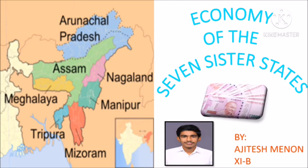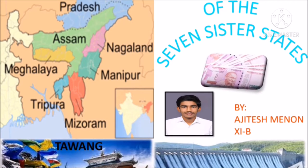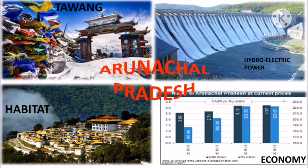Hello everyone, myself Ajitesh Menon and today I am here to talk about the economy of the Seven Sister States. Economy of Arunachal Pradesh — Power: As of March 2020, Arunachal Pradesh has a total installed power generation capacity of 378.64 megawatts, comprising 158.05 megawatts from hydro, 136.72 megawatts from renewable energy sources and 83.87 megawatts from thermal.